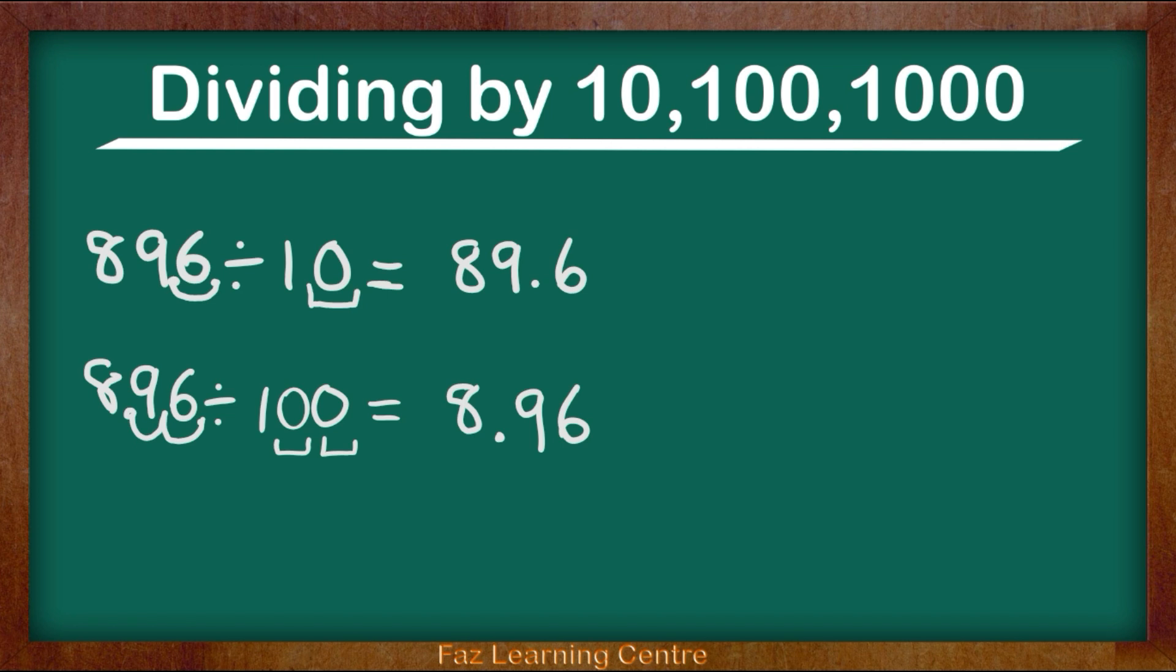Let's look at the last question: 896 divided by 1,000. 896 divided by 1,000 means 1,000 times smaller.